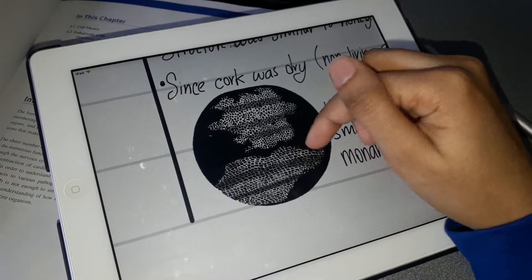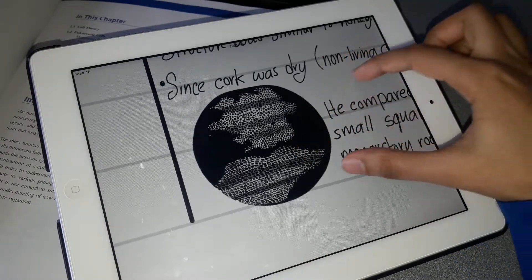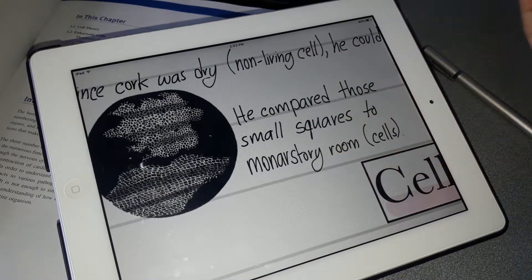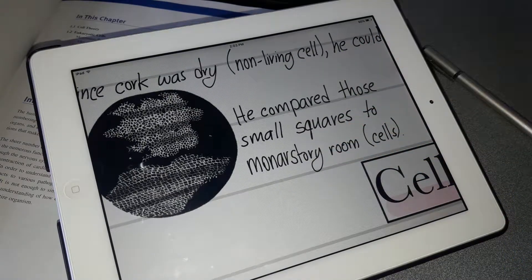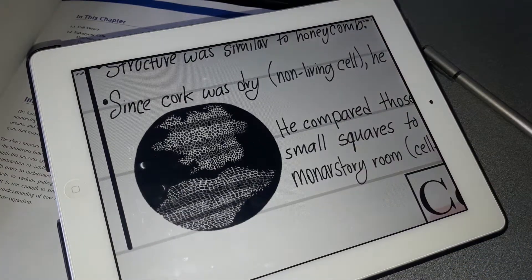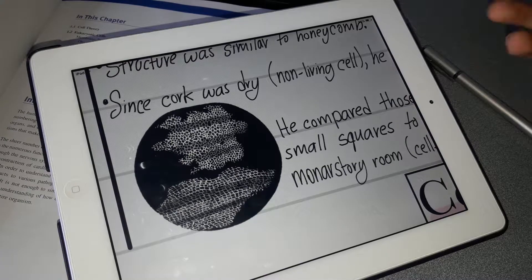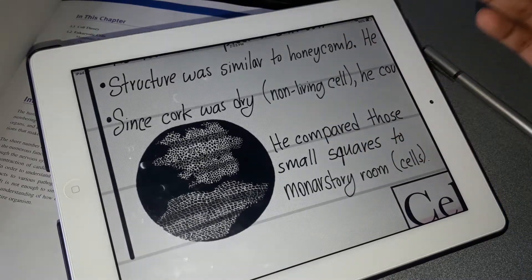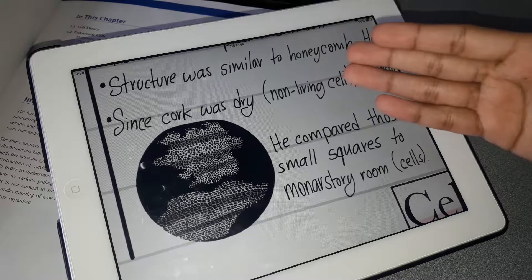So he named those cells. However, he was unable to see other organelles due to the cork not being a living organism.